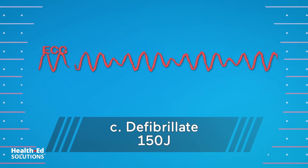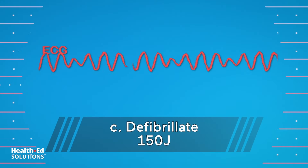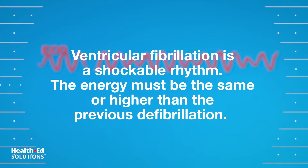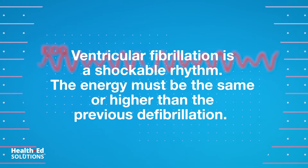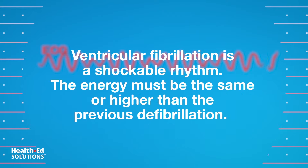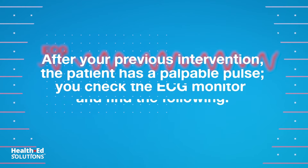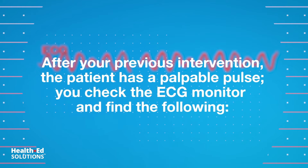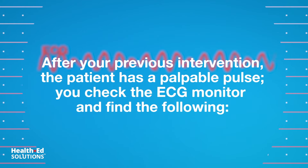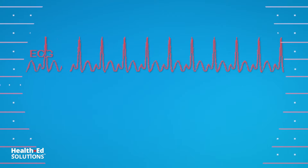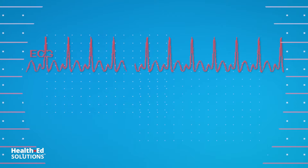Correct answer C: Defibrillate 150 joules. Ventricular fibrillation is a shockable rhythm. The energy must be the same or higher than the previous defibrillation. After your previous intervention, the patient has a palpable pulse. You check the ECG monitor and find the following. Question 11: What is your interpretation of this ECG finding?